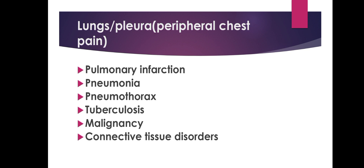Lung or pleural diseases causing peripheral chest pain can include pulmonary infarction, pneumonia, pneumothorax, tuberculosis, malignancy — any pleural or pulmonary malignancy — or connective tissue disorders involving the lungs, for example systemic lupus erythematosus or sarcoidosis, etc.